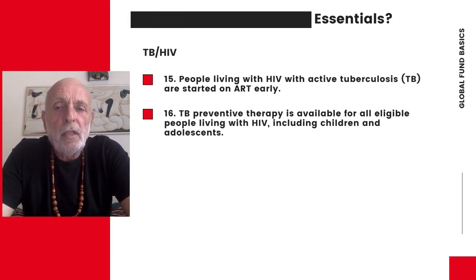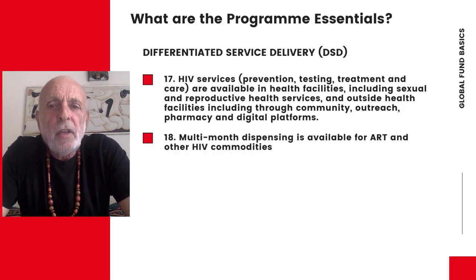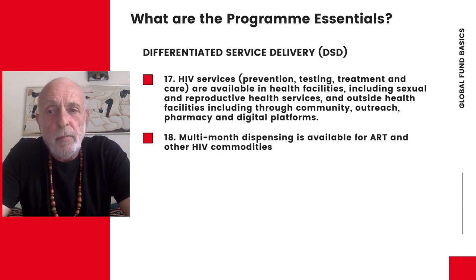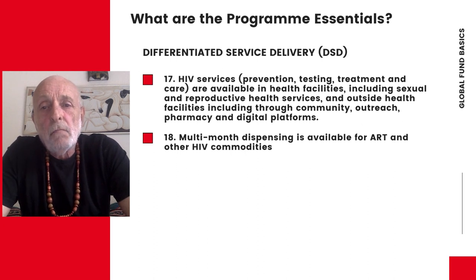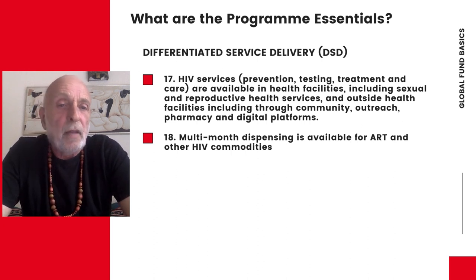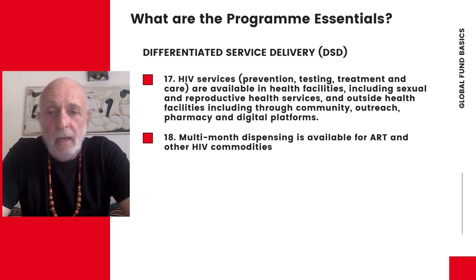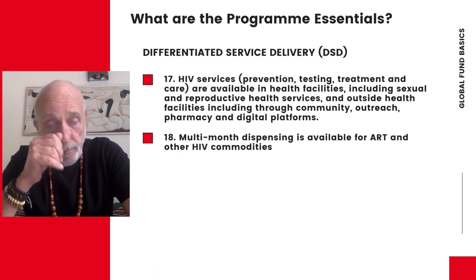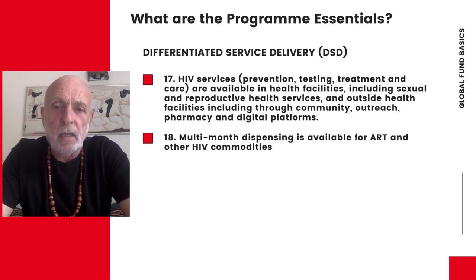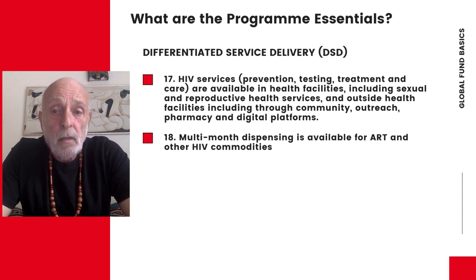Then there is differentiated service delivery. HIV services — prevention, testing, treatment, and care — are available in health facilities, including sexual and reproductive health services, and outside health facilities, including food community outreach, pharmacy, and digital platforms. Multi-month dispensing is available for ART and other HIV commodities. Two key points here: HIV services can be delivered by sex worker-led organizations, and three or even six-month dispensing of ART and other HIV commodities — perhaps for persistent sexually transmitted infections — should be the norm, so that a weekly or monthly visit to a clinic is not needed.